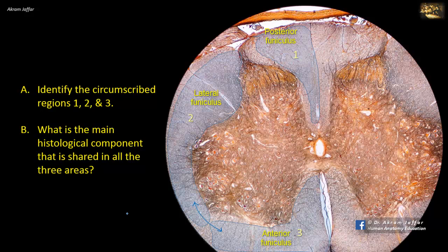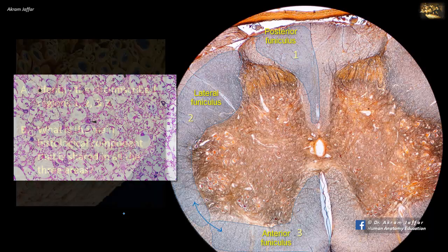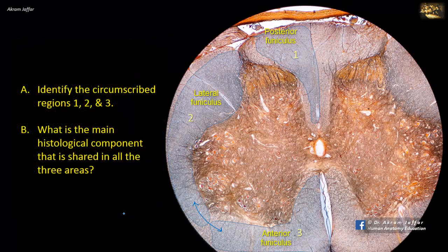A funiculus consists of a group of tracts — ascending, descending, or both. The tracts in turn are composed of bundles of myelinated axons, hence the name white, referring to the myelin sheath, which is mainly formed of lipid material. The myelinated axon is therefore the shared histological component in these three areas of white matter.